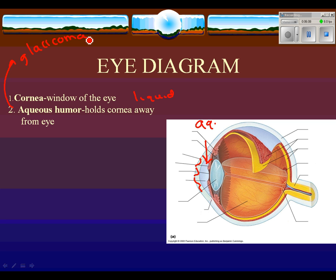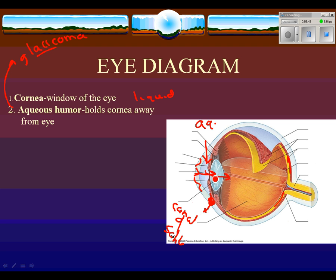Normally the aqueous humor drains out through the canal of Schlemm. But in some people, the aqueous humor builds up because the canal gets blocked. The humor then puts pressure back into the eyeball and eventually on the retina, causing vision loss. When you go to the eye doctor and they blow air into your eye, that's a glaucoma test — they're testing the pressure in your eye from the aqueous humor.